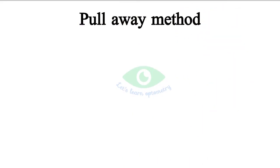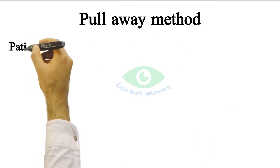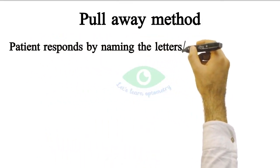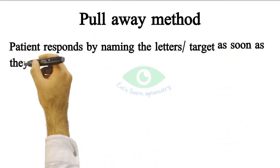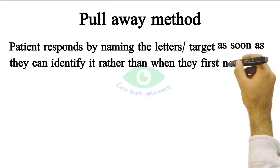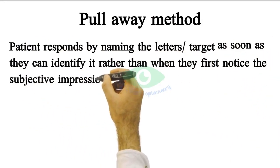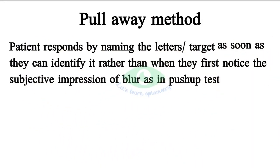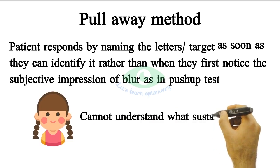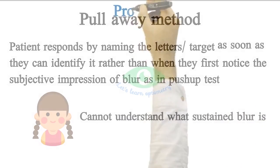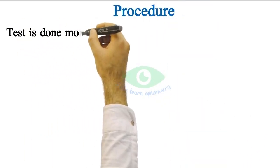This is done to measure the amplitude of accommodation. Here the patient responds by naming the letters or target as soon as they can identify it, rather than when they first notice the subjective impression of blur as in the push-up test. This method is particularly useful in children who cannot understand what sustained blur is.